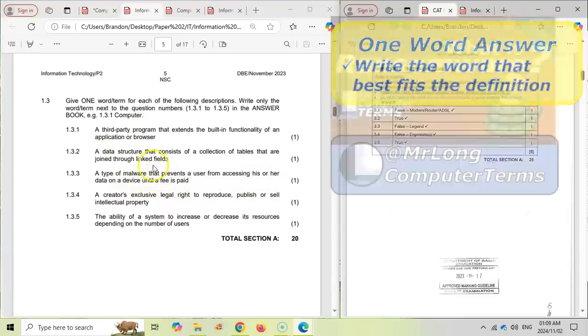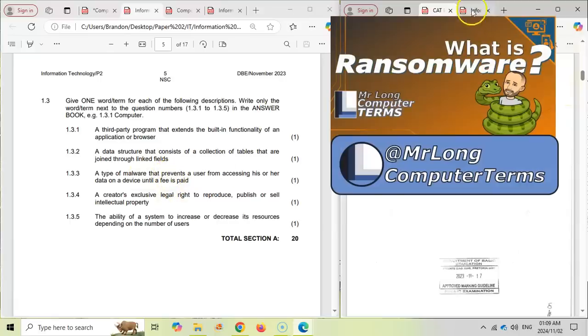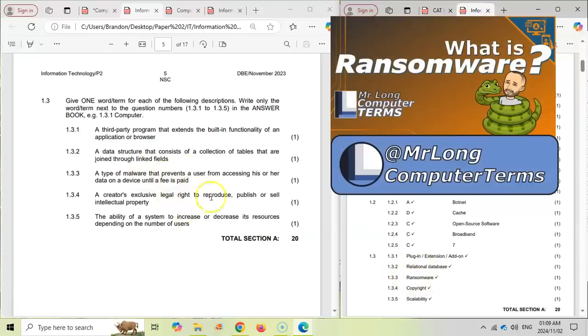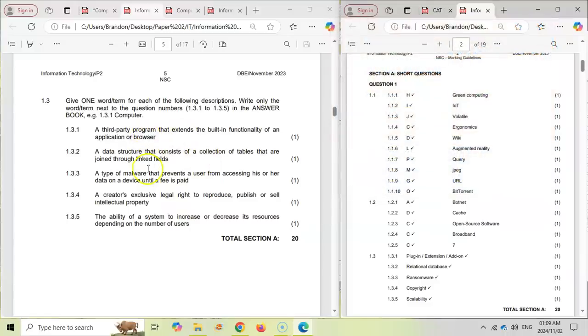So for example, 1.3.3, a type of malware that prevents a user from accessing his and her data on a device until a fee is paid. Well, if you know your definitions well, you know, oh, that's ransomware. And if we come over here and look at that, yes, we can see ransomware is the answer. So you're just writing down the word that is associated with that definition.